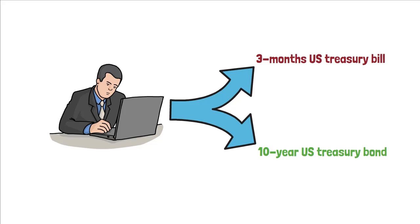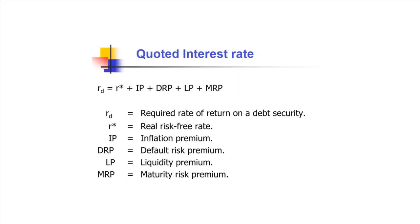It all depends on what purpose it is used for and who the analyst is. The equation used to measure interest rate is: quoted interest rate equals R, which is equal to R star, plus inflation premium, plus default risk premium, plus liquidity premium, plus maturity risk premium.